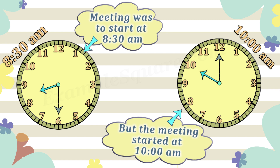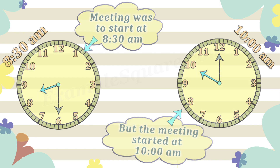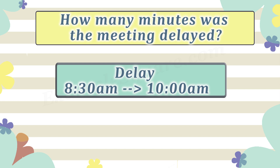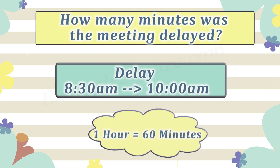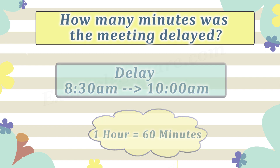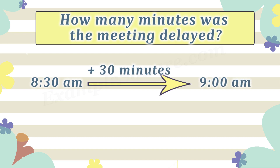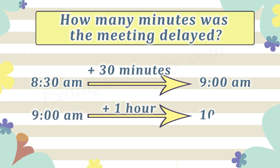The question is how many minutes was the meeting delayed — that is, how many minutes are there between 8:30 a.m. and 10 a.m. There are 60 minutes in an hour. If the time is 8:30 a.m., then in 30 more minutes the time would be 9 a.m., and in another one hour the time would change from 9 a.m. to 10 a.m.